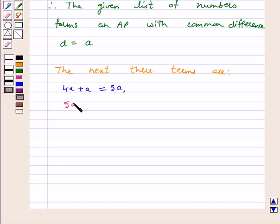5A plus A equals 6A, and 6A plus A equals 7A, since A is the common difference.